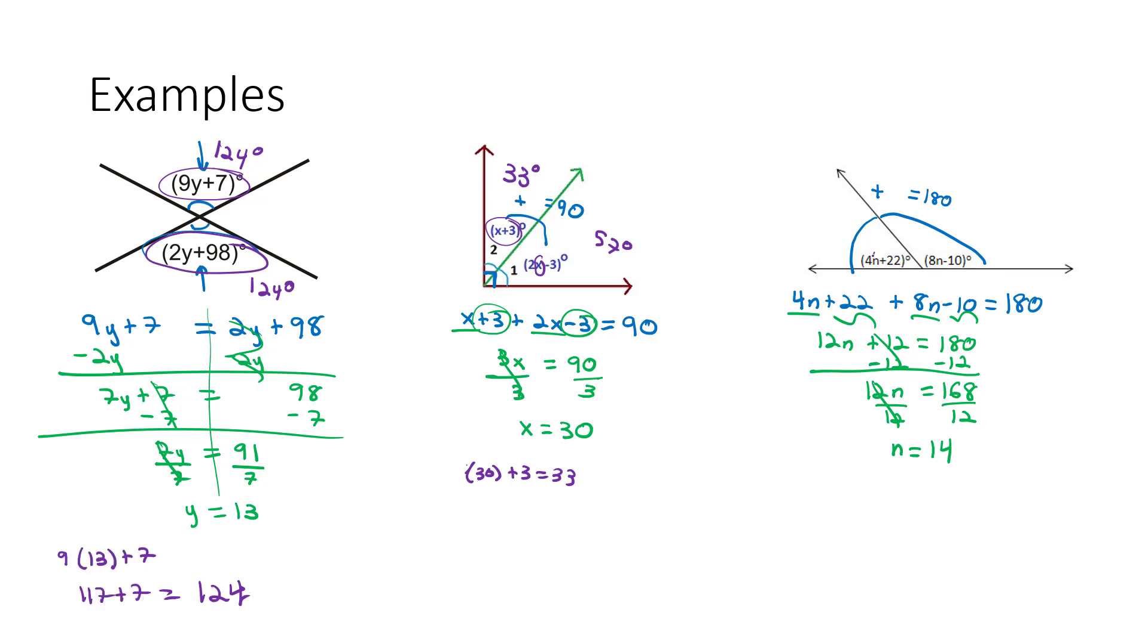Still to figure out what those angles are though, we're going to have to plug our value in for n. So let's do that in the first angle. 4n or 4 times 14 plus 22. 4 times 14 is going to be 56. Plus 22, 78 degrees is going to be that first angle.